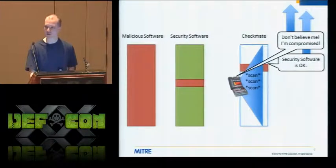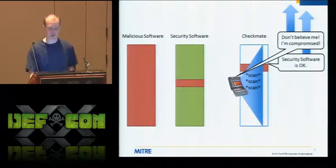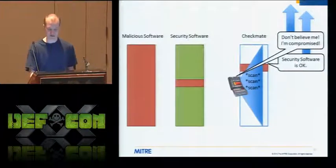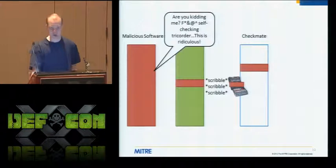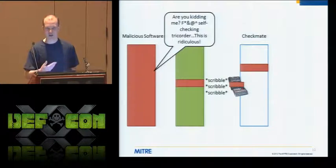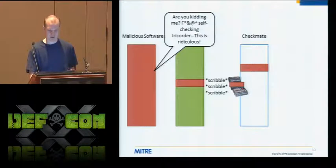Some security software does incorporate a self-checking element, but we argue that current self-checking mechanisms are naive. When you're doing a self-check and evaluating it on the system being checked — the expected compromised system — that leads to problems where it's ultimately bypassable. If we add this sort of self-checking mechanism, the attacker can just play the same game and manipulate the self-check software. You can keep playing this game ad infinitum and it won't make a difference.